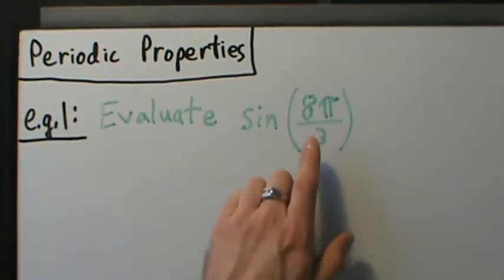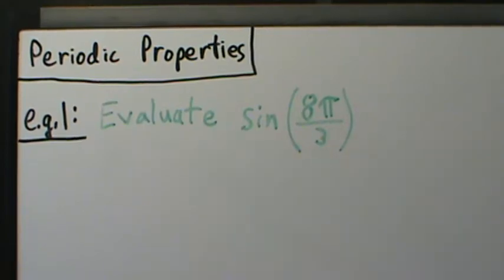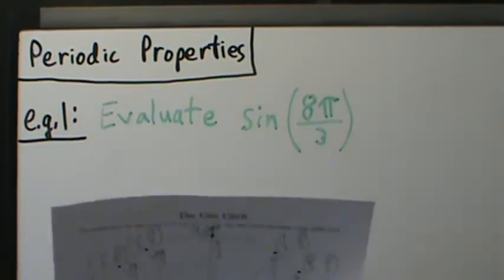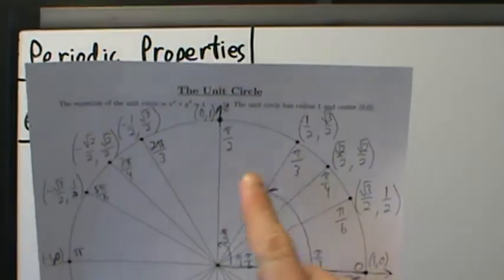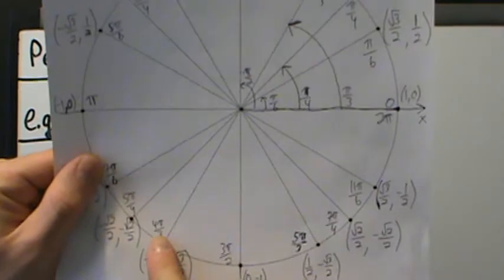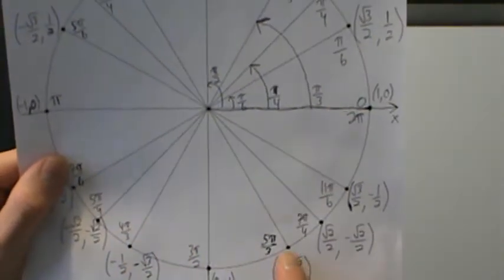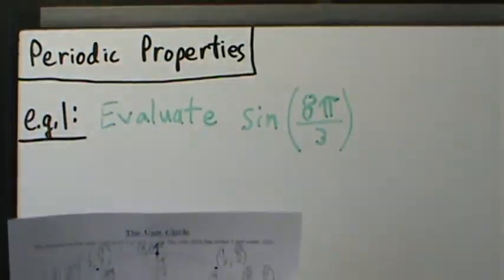Let's look at 8π over 3. Is that a special angle on the unit circle? Well, not exactly. So π over 3, 2π over 3, 4π over 3, and 5π over 3 — there's no 8π over 3 that appears in how we labeled it.